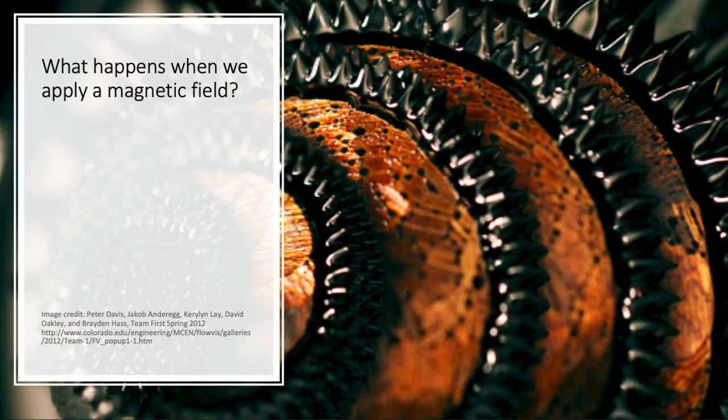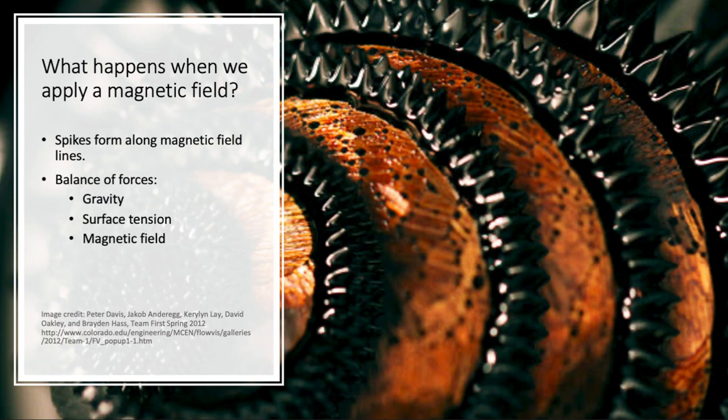So what happens when you are applying a magnetic field to a ferrofluid? You'll see these spikes form along the magnetic field lines. And this is due to a balance of forces. Gravity, of course, is pulling down. Surface tension is helping the surface stick together. And then the magnetic field is making those magnetic particles align along the magnetic field.